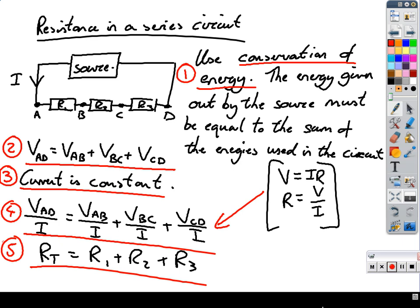If we write down the conservation of energy, that would be the first part of our derivation. We get this formula by saying the voltage across AD, which is the voltage across the source, is equal to the voltage across each of the components. In a series circuit, we know the current is constant, so that'll be another part of our information.